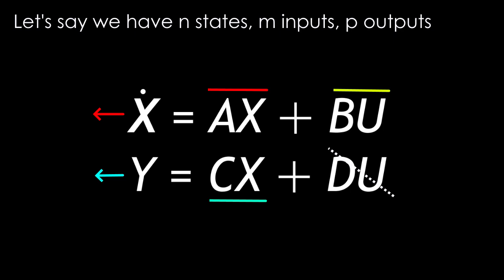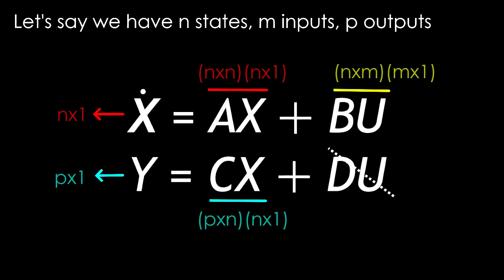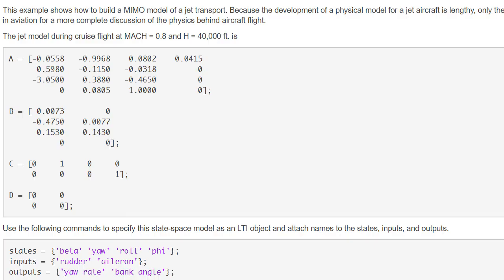When it comes to dimensions, this is very important—how big the matrices are. Let's say you have N states, M inputs, and P outputs. The A matrix will be N by N. The B matrix will be N by M—the number of states times the number of inputs—because U is simply a column vector of M since those are your inputs. You can see an example here on the MATLAB workspace.